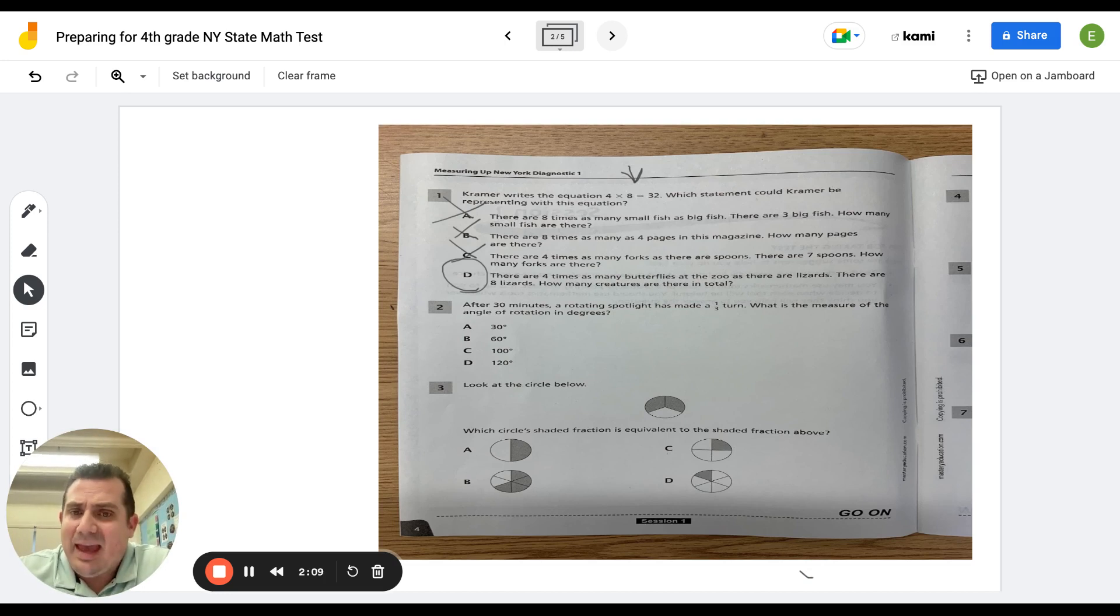Okay. Now we go to number two. After 30 minutes, a rotating spotlight has made a third, a third turn. What is the measurement of the angle of rotation in degrees? Well, when we're talking, when we're making turns, right, and we're making a third of the way around here, this is where I'm drawing, I'm drawing a circle, right?